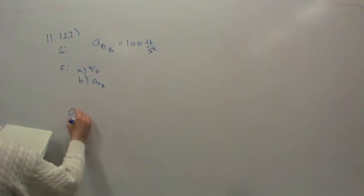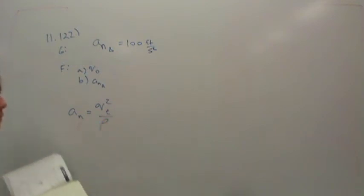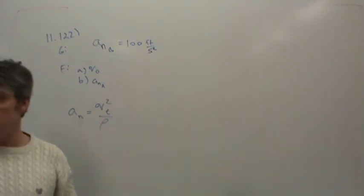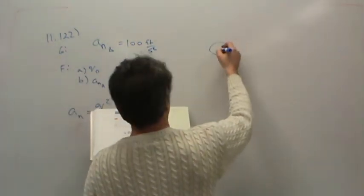Well, they gave us a normal acceleration. What we know about normal acceleration is that it's related to tangential velocity as follows. It's related to the tangential velocity of something. Let me sketch the figure. I think it's going to be helpful to have it on the board.